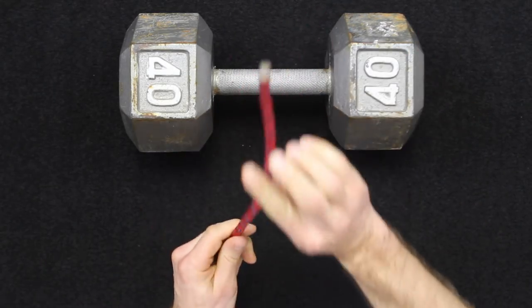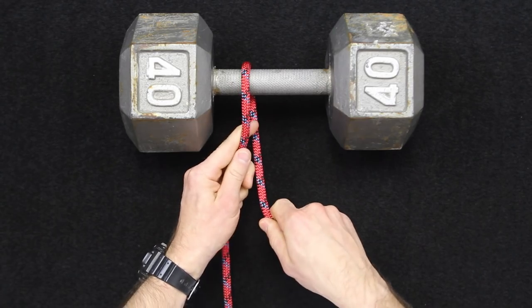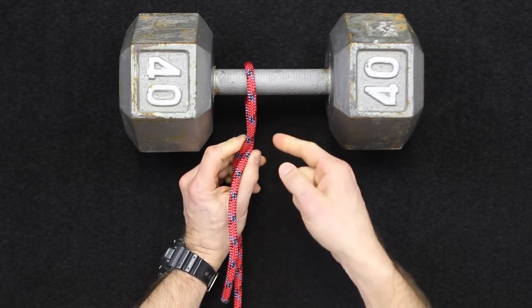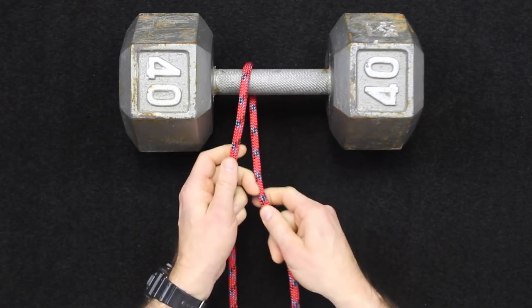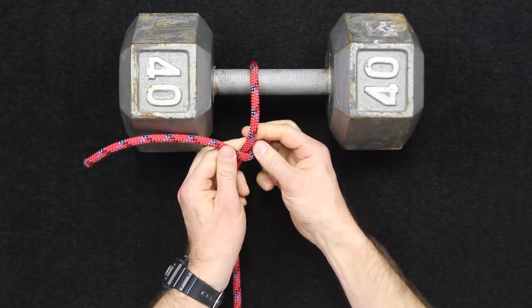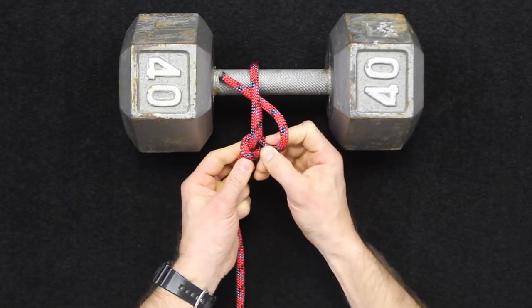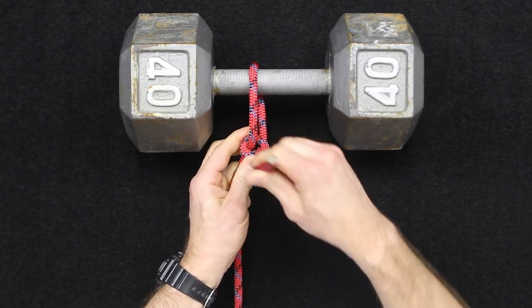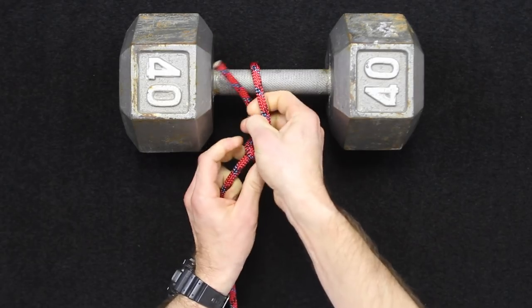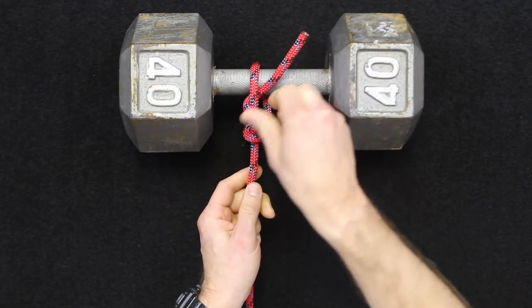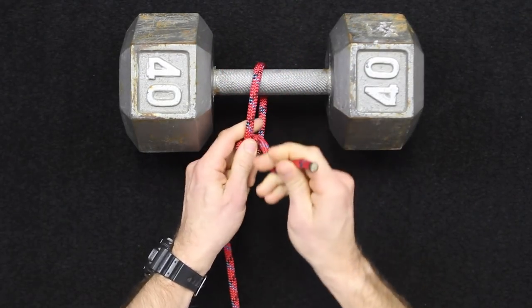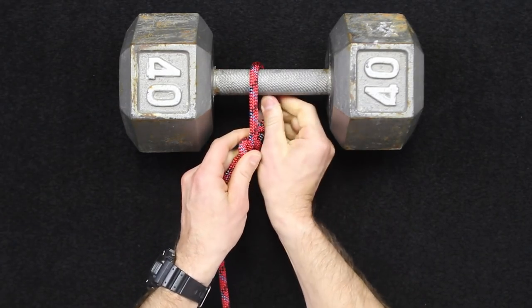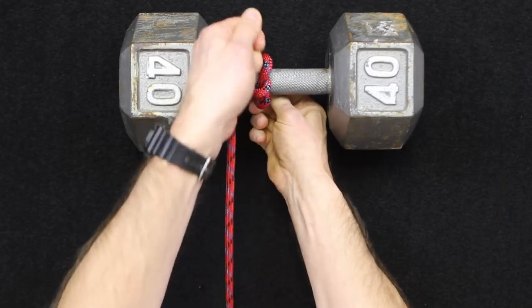Alright, so first off to tie the timber hitch, we're going to go around the object that we're tying on to, and there's very much a right way and a wrong way to do this part and it can get confusing, so it's important to pay attention here. What you're going to want to do is wrap around the standing part of the rope, and instead of wrapping up onto that and continuing the wrap, which is what some people do accidentally, you're going to wrap around the lower portion here and you want to get at least three wraps and tighten.